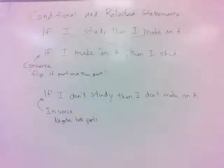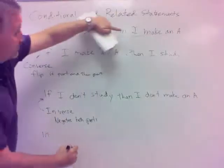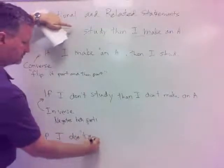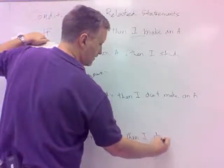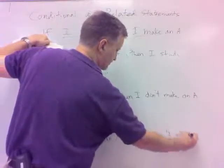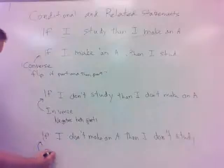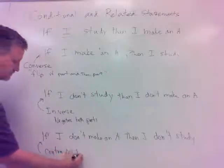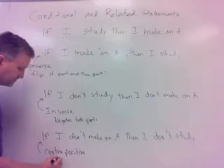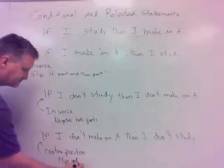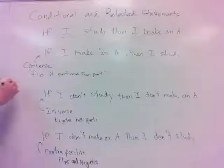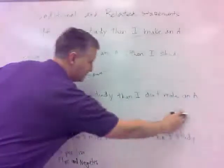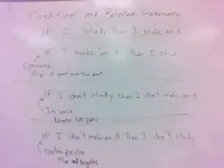The last one does both — it flips and negates simultaneously. So what would that be? If I don't make an A, then I don't study. That's called the contrapositive. So the contrapositive both flips and negates. The converse flips, the inverse negates, and the contrapositive flips and negates.